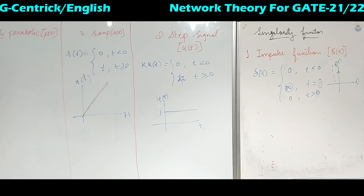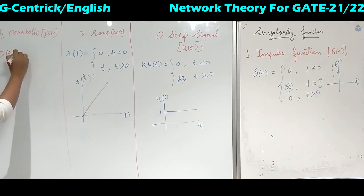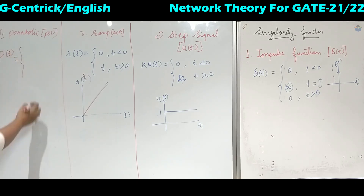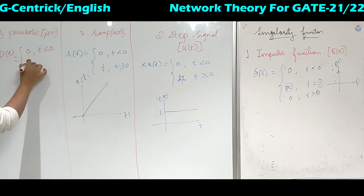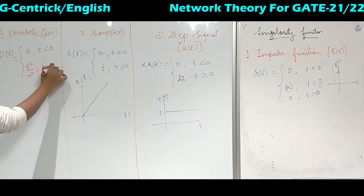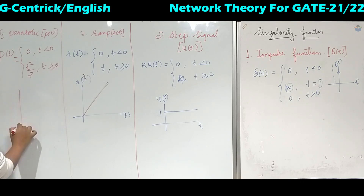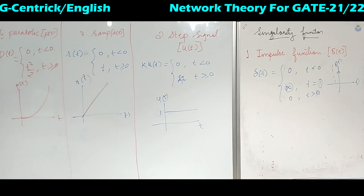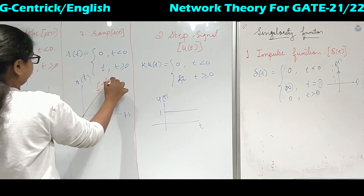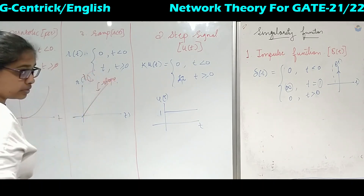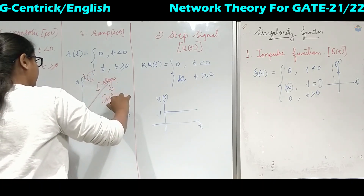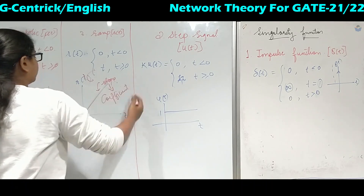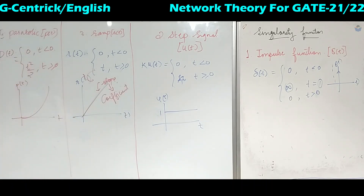Coming to the parabolic function, it is denoted by p of t and defined as: 0 for t less than 0, and t squared by 2 for t greater than or equal to 0. Its graph is parabolic in shape. The slope of the straight line gives its coefficient, and you can find it using y equals mx plus c.